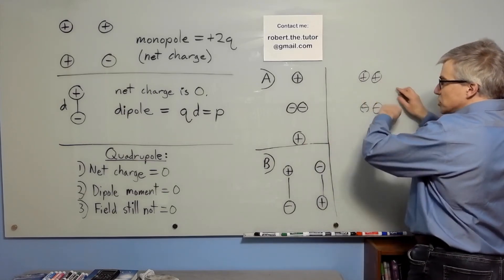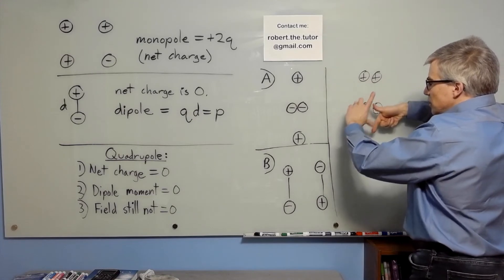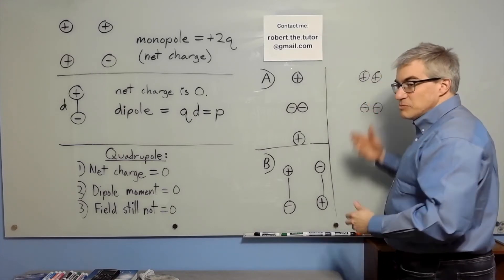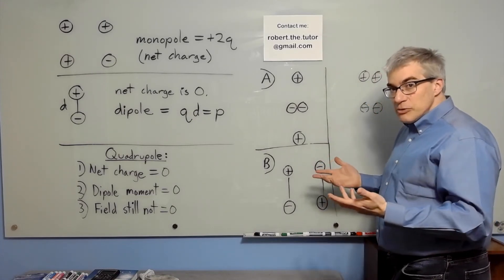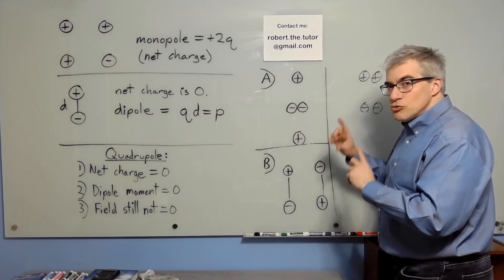Now they can't be facing the same way—you would just get double the dipole. And if you put them in opposite directions and they were right on top of each other, the pluses and minuses would cancel; you'd have exactly zero. So you have to have two dipoles that point in opposite directions.